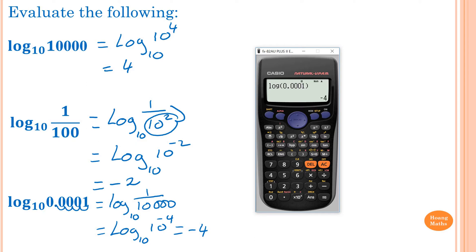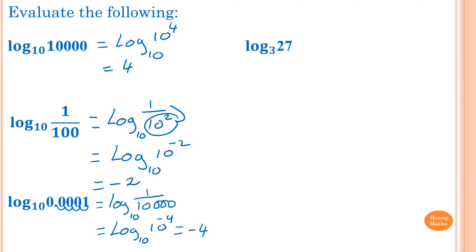Now log base 3 of 27. We need to convert 27 into 3 to the power of something. So log base 3 of 3 to the power 3 — because 3 to the power 3 gives 27. You can also use a calculator to guess and check. The answer is equal to 3.